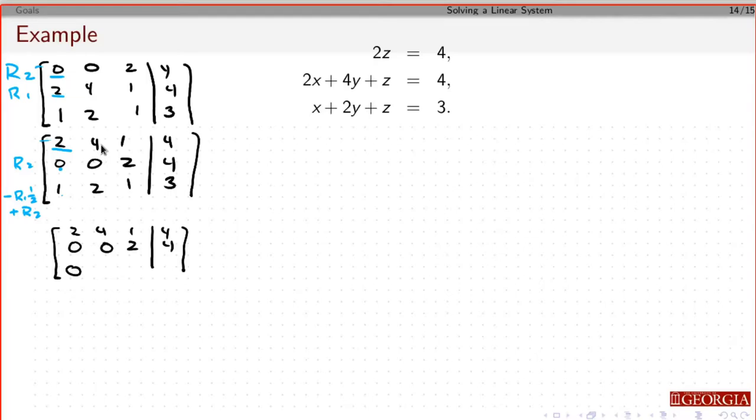4 times minus 1/2 is minus 2, plus 2 is 0. Minus 1/2 times 1 is minus 1/2, plus 1 is 1/2.